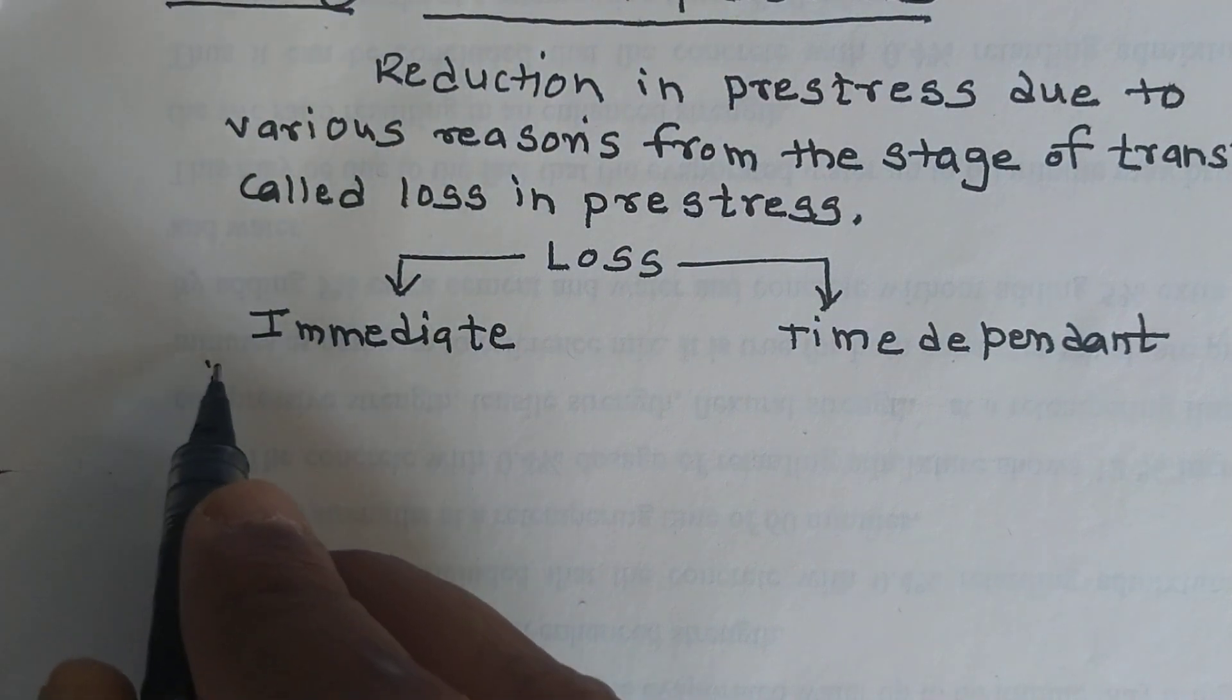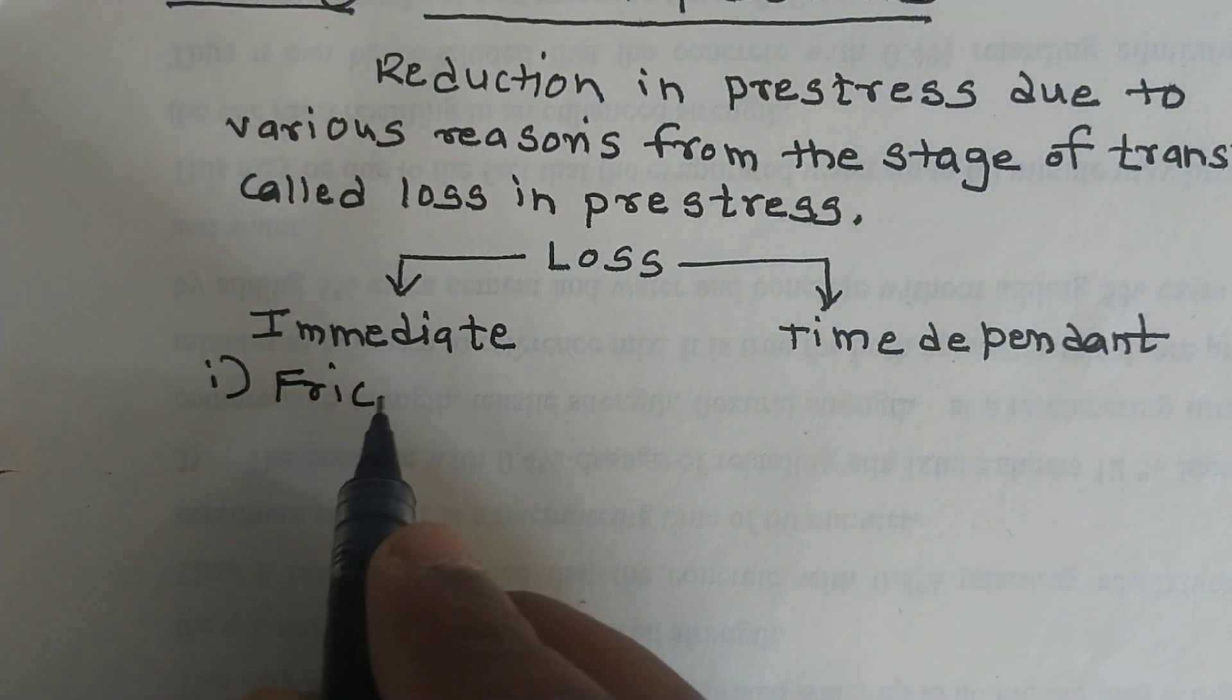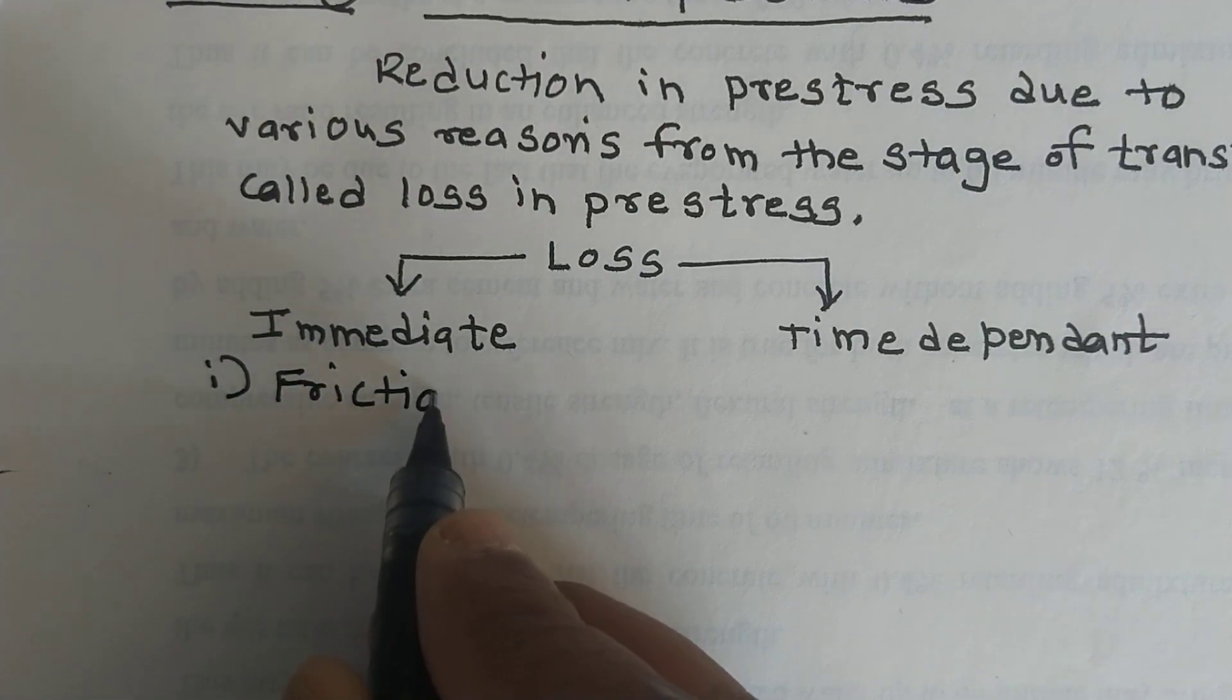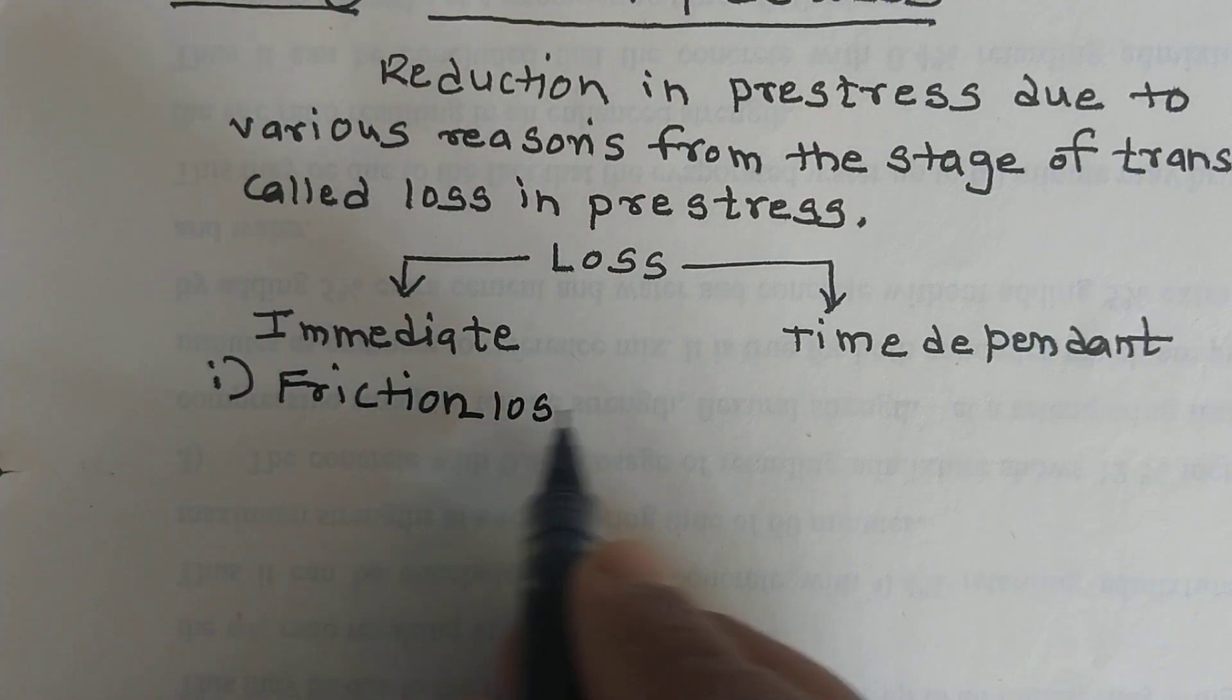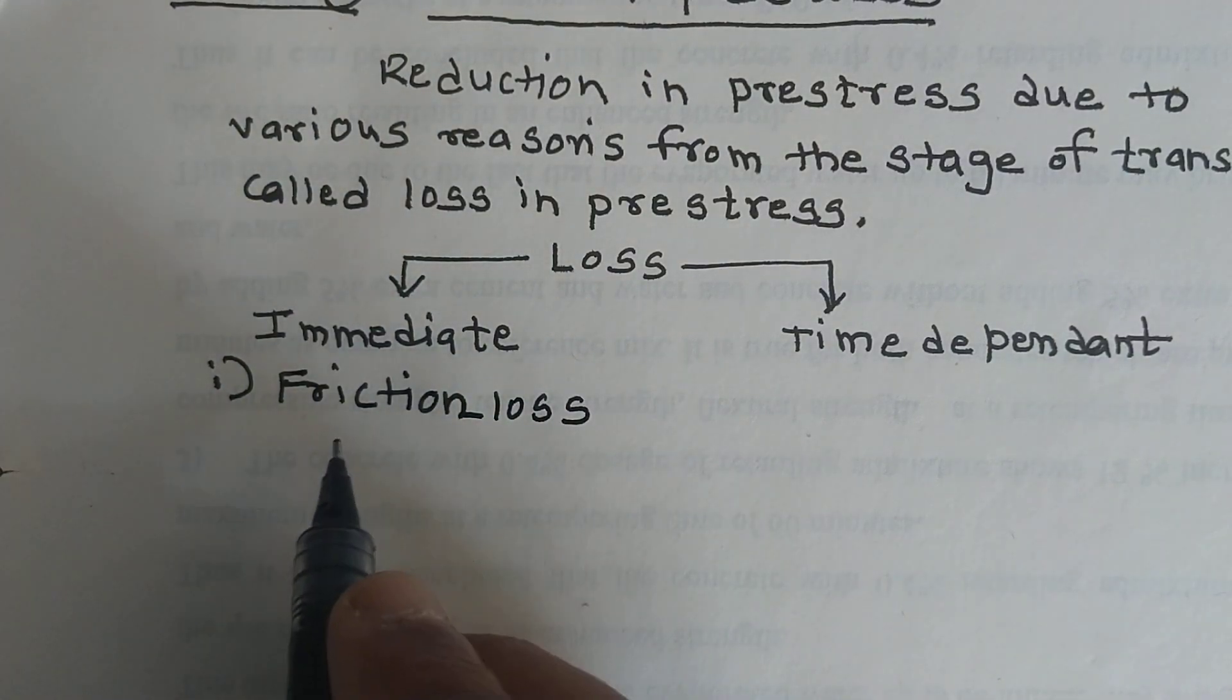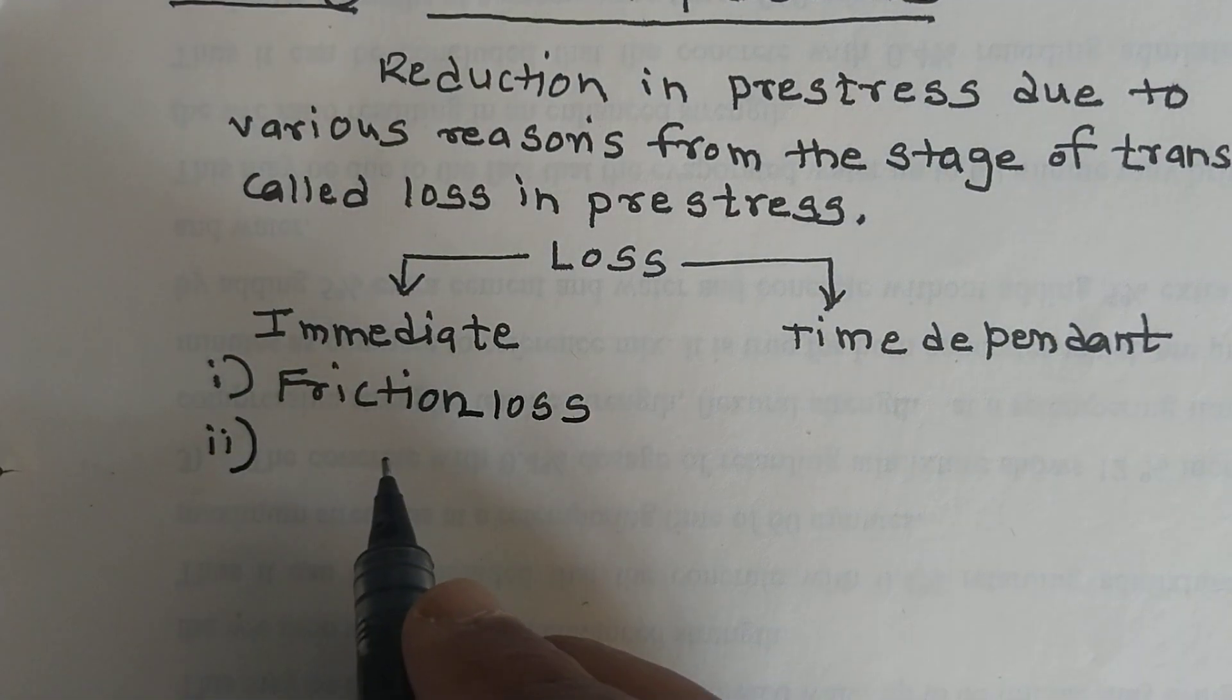Immediate loss is sub-classified into first is friction loss. When there is a friction between duct and cable, friction loss is developed.